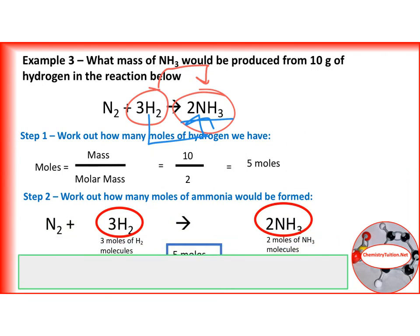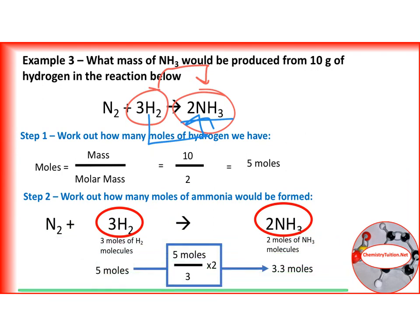But the easiest way to do this is to look at the material that you're starting with. So I'm starting, I know about hydrogen. So I know about hydrogen here. So I know I have got 5 moles of hydrogen.